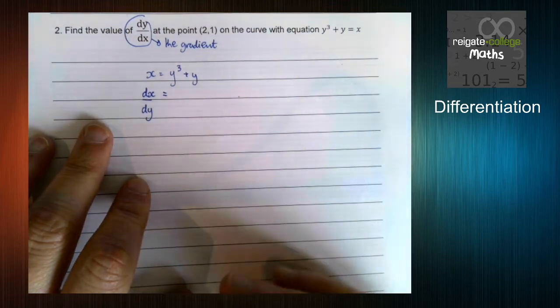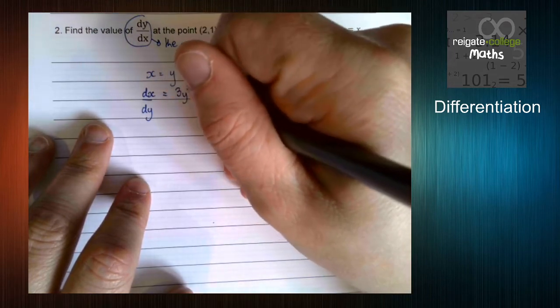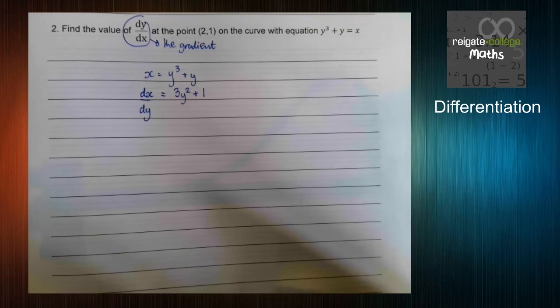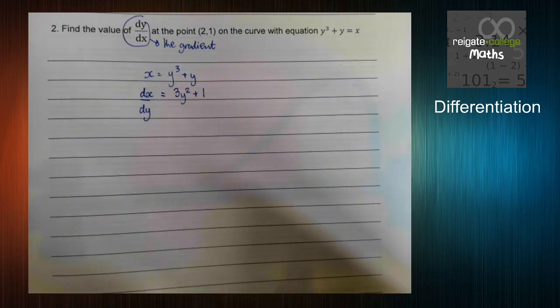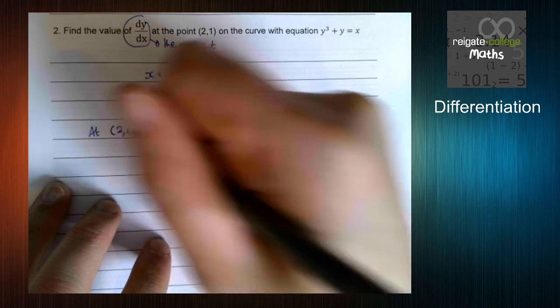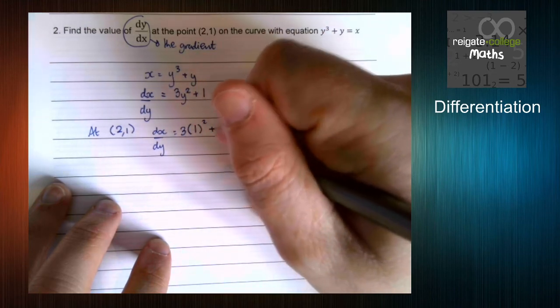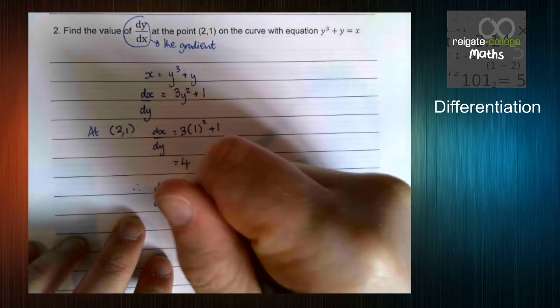OK, so if we differentiate with respect to y, remember that means y follows our normal rules. So we end up with 3y² + 1. Now, very much depending on the way you want to approach this question, it's up to you. But what I would say is what I like to do generally is put numbers in first, then rearrange, unless you've been asked to find the function. So what I would say here is at the point (2, 1), dx/dy = 3 times y², so 1² + 1, which is 4. Therefore, dy/dx = 1/4.